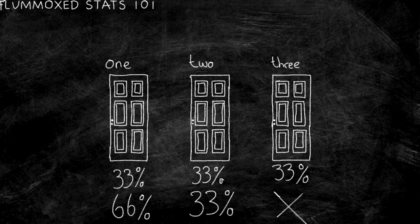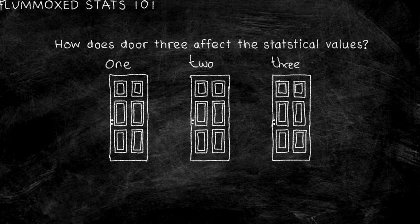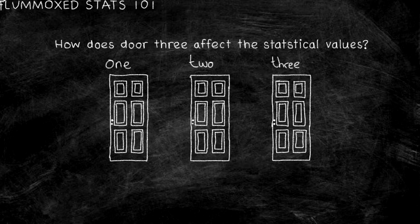The question of whether to switch doors is much more tricky. Let's look at this mathematically. For the 50-50 school of thought, we disregard the open door as you haven't picked it and there's nothing behind it. For the 66% school of thought, however, we keep the third door within the equation, leading to a change. This change means switching doors is more statistically viable. The question between the two schools of thought is: do we disregard the empty door?